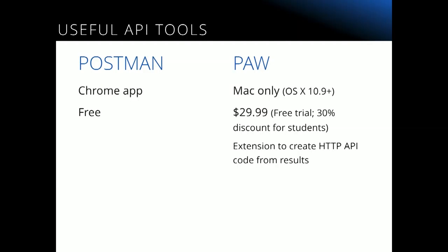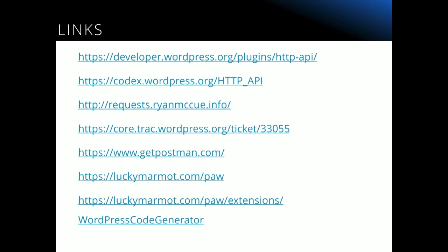Some API tools I use for working with APIs: Postman is a free Chrome app. Paw is a more polished app — it's OSX only, but you can try it before you buy. There's also a Matt Boynes at Ally Interactive who built an extension for Paw that will take your API code when you're testing, let you manipulate URLs, and create a code block for the HTTP API — so you can just copy and paste it right into your code. There are links for the track ticket for getting Requests in, as well as the extension for Paw.